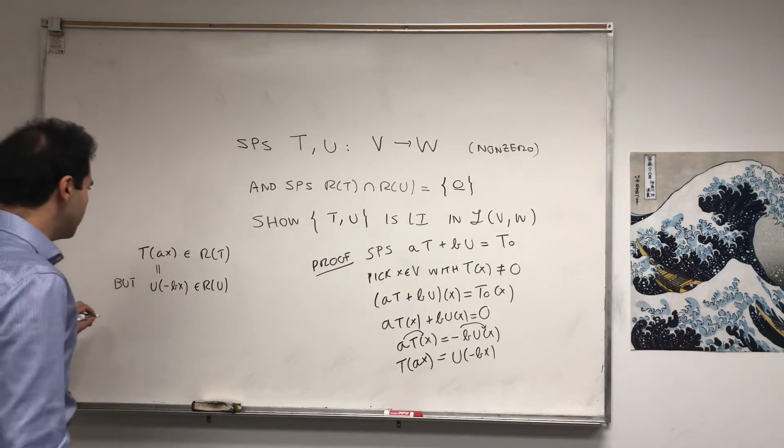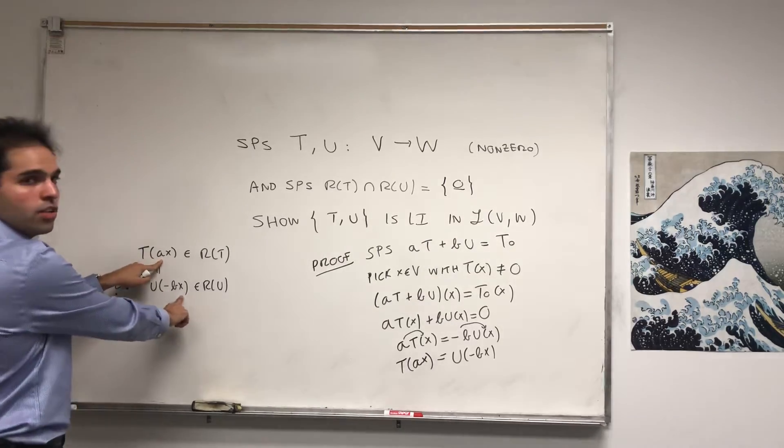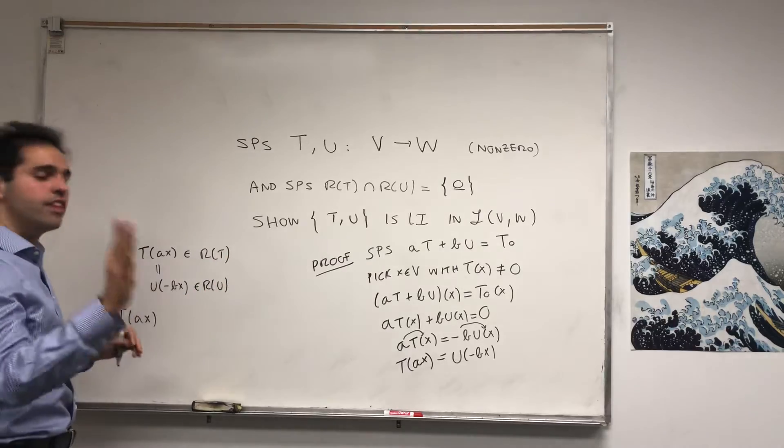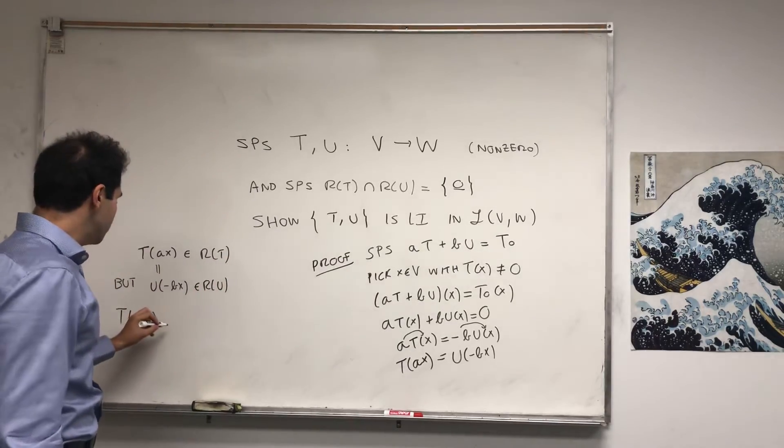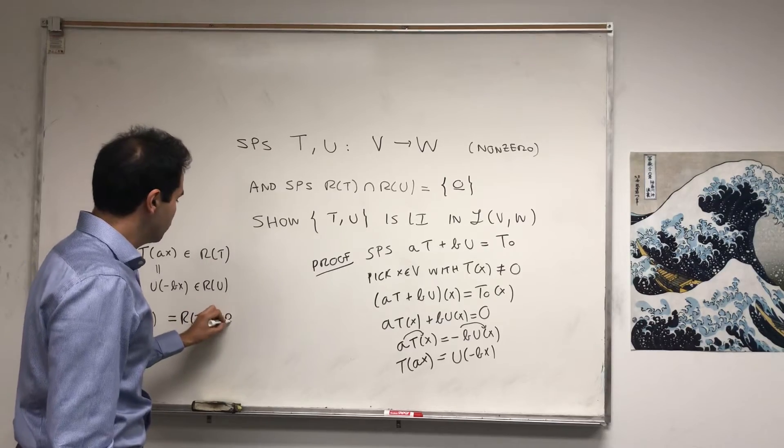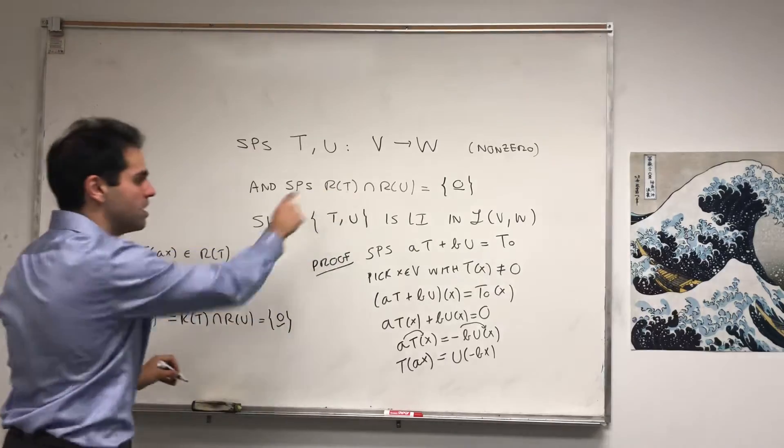So what we get is T of AX - and again, it doesn't matter that we have two different vectors, as long as it's of the form T of something, it's in the range. So T of AX is actually in both spaces: R of T intersect R of U. What we know by assumption is that this is zero.